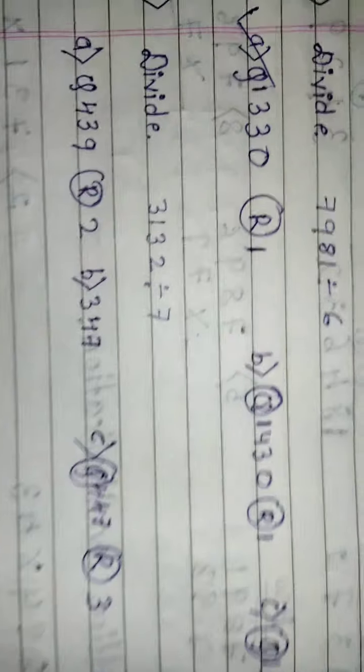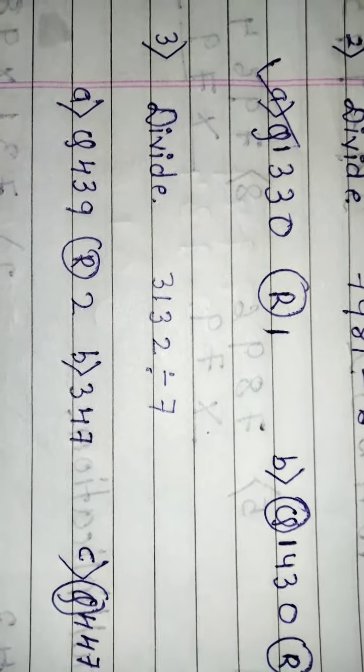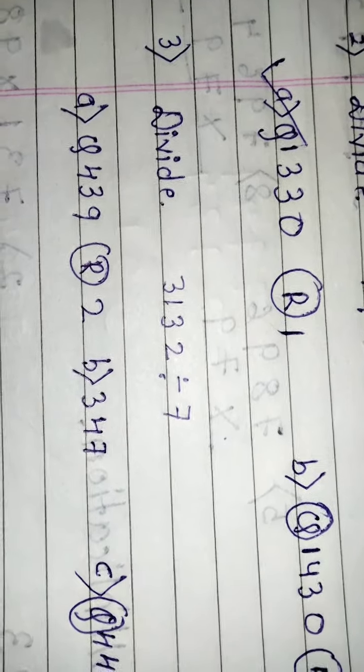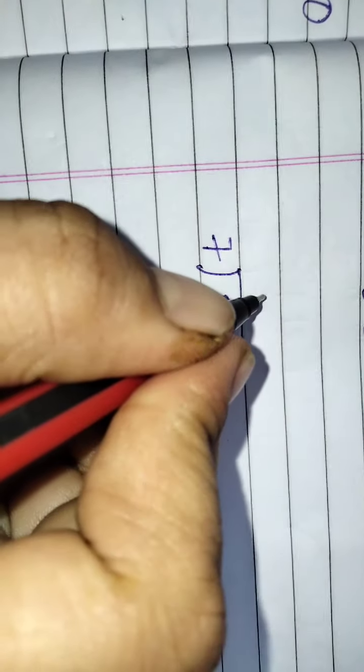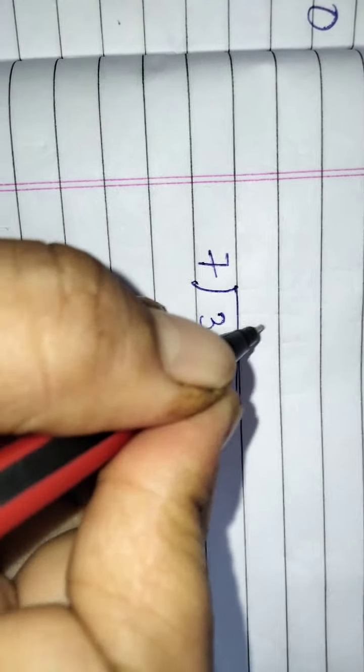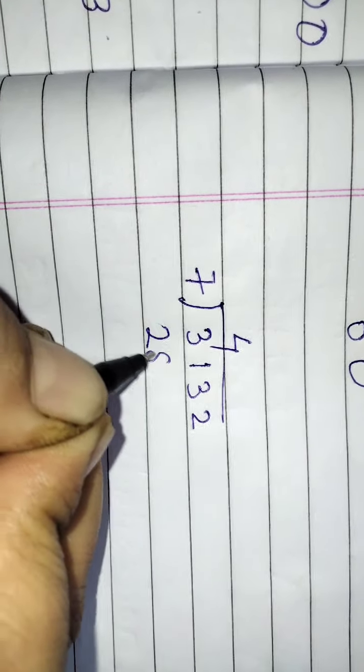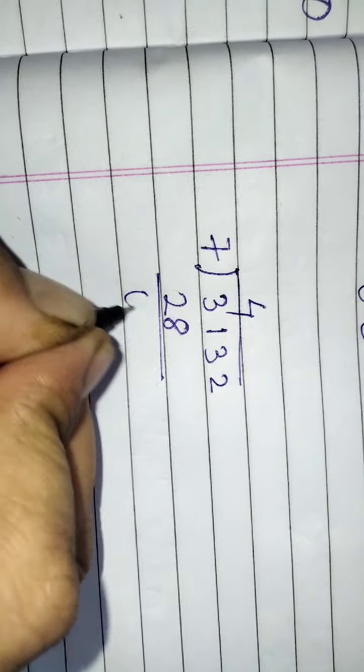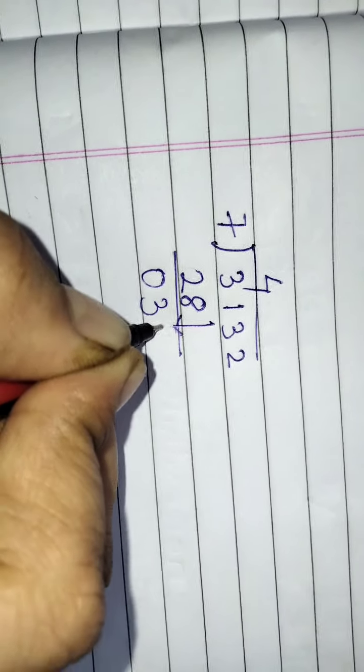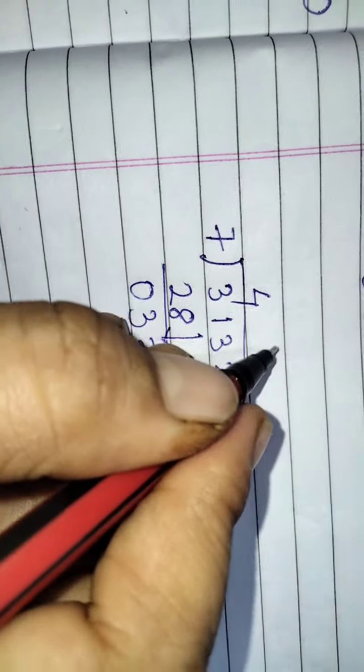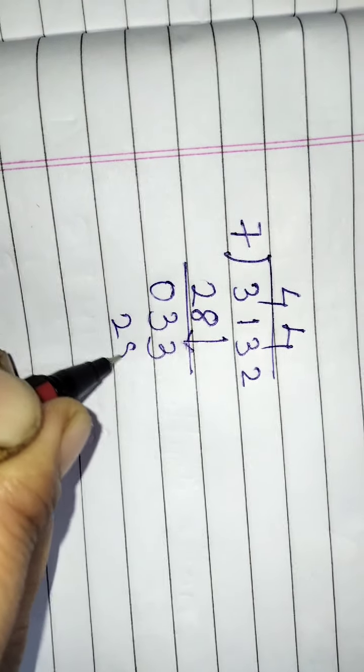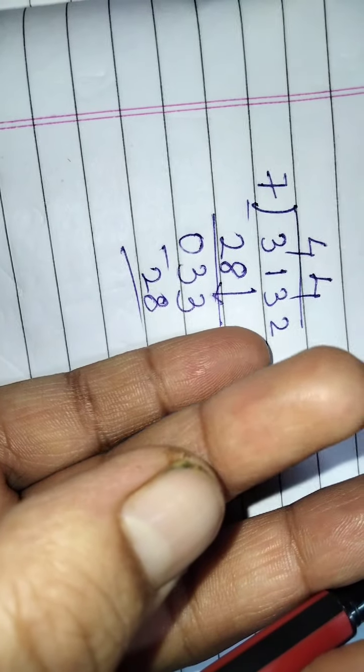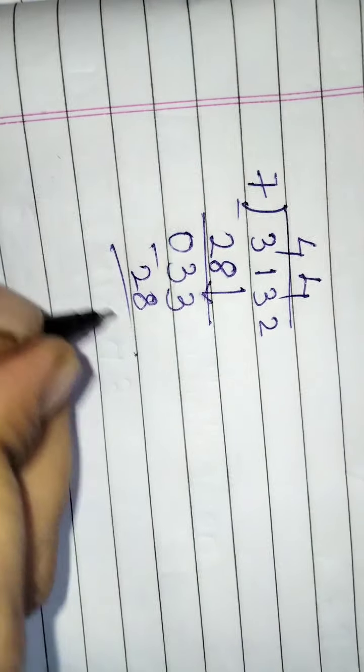Now next divide. 3132 divided by 7. 7 3's... 7 4's are 28, counting to 31. 7 4's are 28, counting to 33, gives 5.